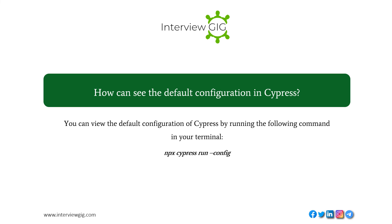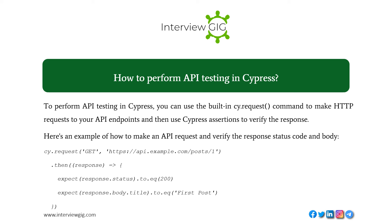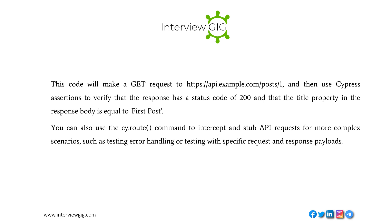How can I see the default configuration in Cypress? You can view the default configuration by running the appropriate command in your terminal. How to perform API testing in Cypress? Use the built-in cy.request command to make HTTP requests to your API endpoints, then use Cypress assertions to verify the response. For example, making a GET request to https://api.example.com/posts/1 and asserting the response has a status code of 200 and the title property equals 'first post'.